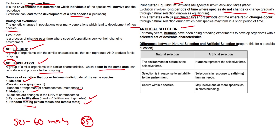Moving on to artificial selection: for many years humans have been doing breeding experiments to develop organisms with a selected set of desirable characteristics. A dangerous historical example is Adolf Hitler, who set up breeding camps with physically dominant individuals, desiring to create the Aryan race. This was extremely dangerous ideology and led to the genocide and extermination of six million Jewish people.